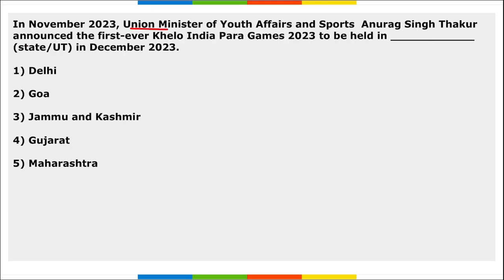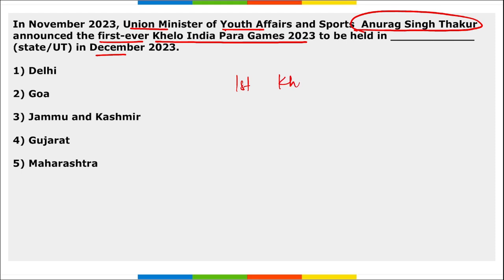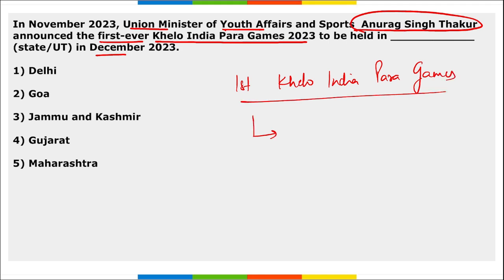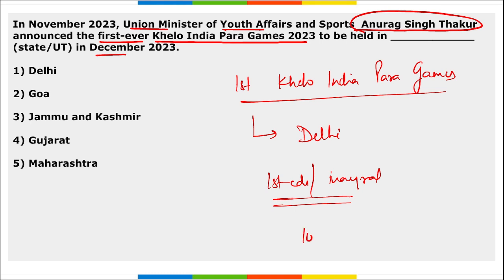Next: Union Minister of Youth Affairs and Sports Anurag Singh Thakur announced the first ever Khelo India Para Games to be held in Delhi in December 2023. This is the inaugural edition of the Khelo India Para Games, scheduled to be held in Delhi from 10th to 17th of December.